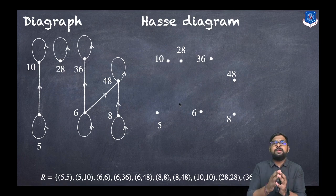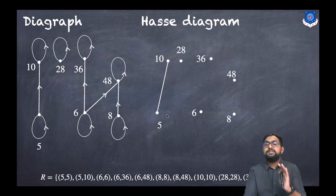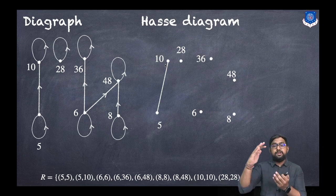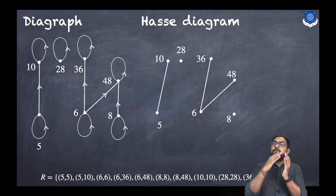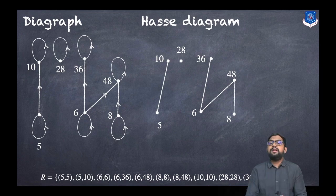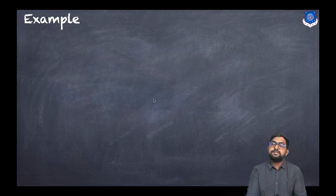Fourth step: draw all edges in the upward direction so that just by looking at the graph we can say which point is related to which. So 5 is related to 10, drawn upward; 6 is related to 36 and 6 is related to 48, drawn upward; 8 is related to 48. This is the Hasse diagram.